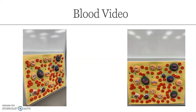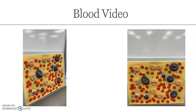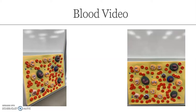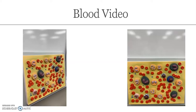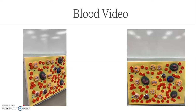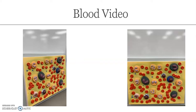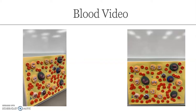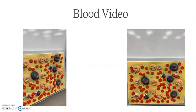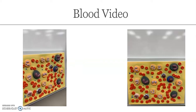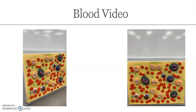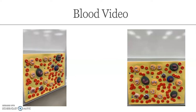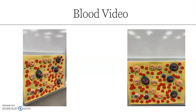Welcome. Here is our model for the formed elements — the cells that are found within your blood vessels, found within your blood. We have three types of formed elements found within your blood.